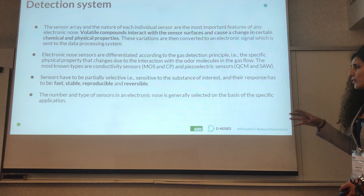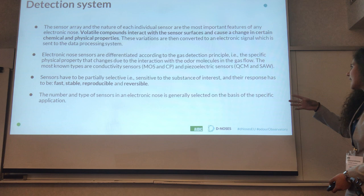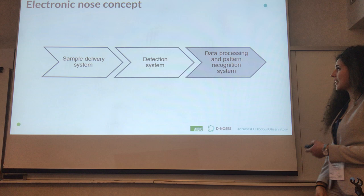Electronic sensors are differentiated according to the type of chemical or physical property stimulated by the presence of the VOCs. The most common types are conductivity sensors — among which metal oxide semiconductors and conducting polymers — and piezoelectric sensors like quartz crystal microbalances. The last part of the electronic nose is the data processing and pattern recognition unit.